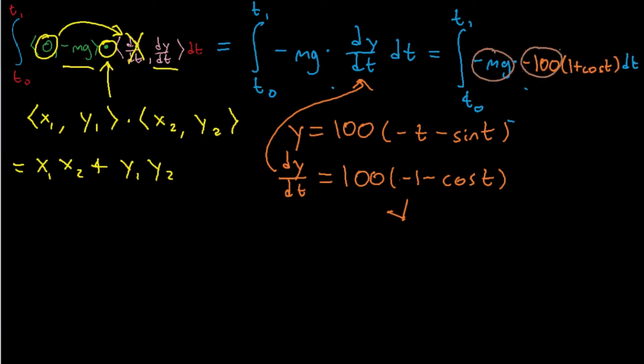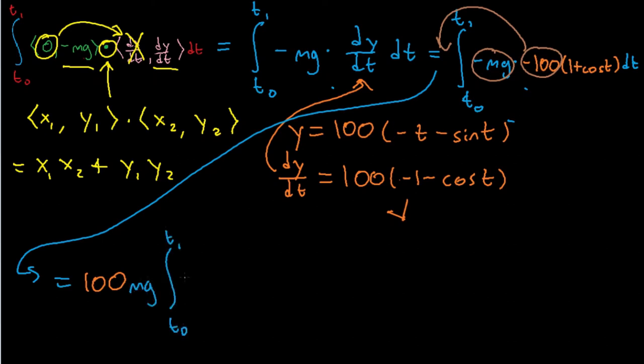There's a few constants we can move out of the integral, giving us a manageable 100mg times the integral between t0 and t1 of (1 + cos t) dt, which should be doable.